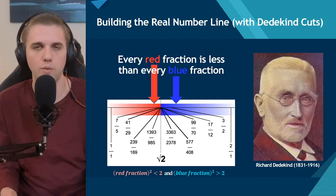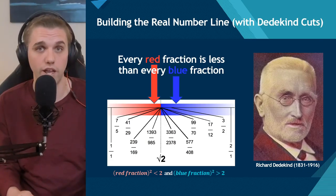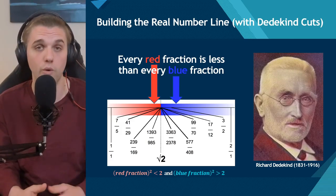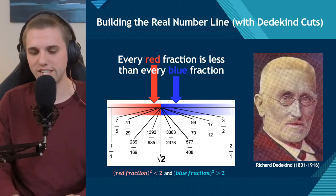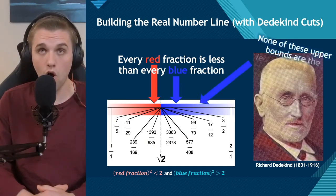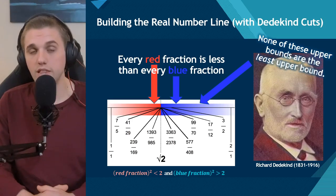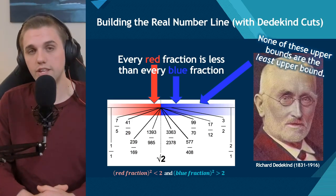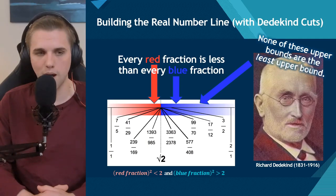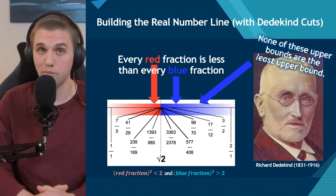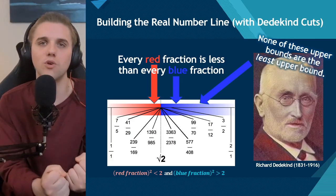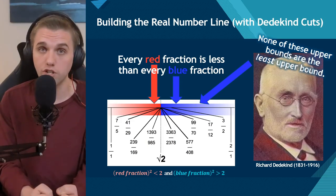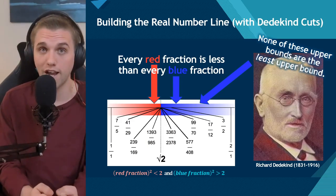How do we know this hole is not a fraction? Later in this video I'll prove that the square root of two is not a rational number — it cannot be represented as a fraction. What Richard Dedekind discovered was that the set of all blue fractions, which are upper bounds, doesn't have a least upper bound. This was troubling because the least upper bound property is a very convenient property for an abstract mathematical object to have. So we want the rational numbers to have that property, but unfortunately the square root of two is not a fraction.